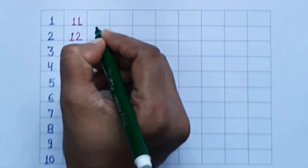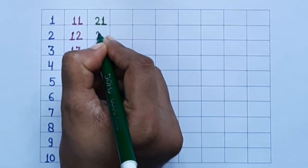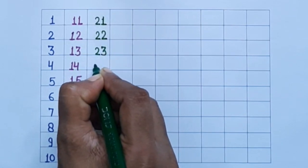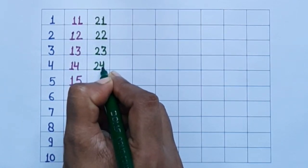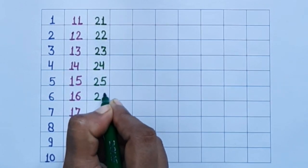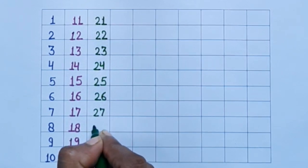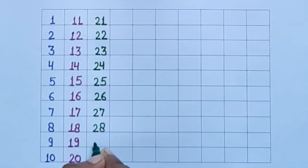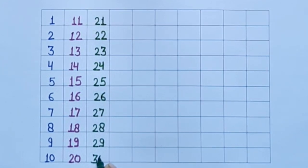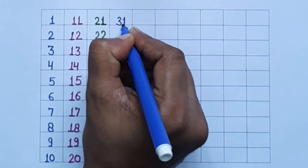21, 22, 23, 24, 25, 26, 27, 28, 29, 30, 31.